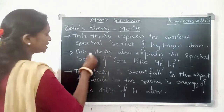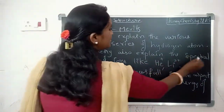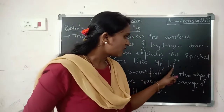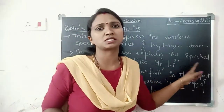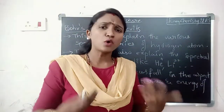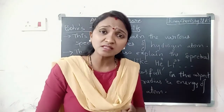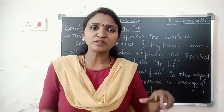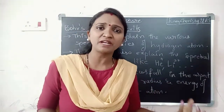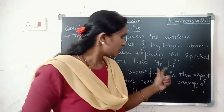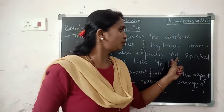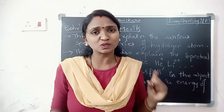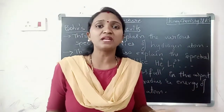The second merit is that this theory also explains the spectral series of ions like helium plus (He⁺) and lithium 2 plus (Li²⁺), etc. Bohr explained the spectral series of these hydrogen-like ionic species very well.